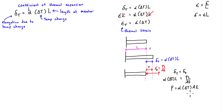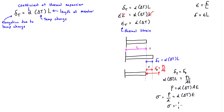Dividing both sides by area A, we get P/A = α·ΔT·E. Since P/A equals stress, the internal thermal stress that develops in a constrained member is σ = α·ΔT·E, where E is the modulus of elasticity.